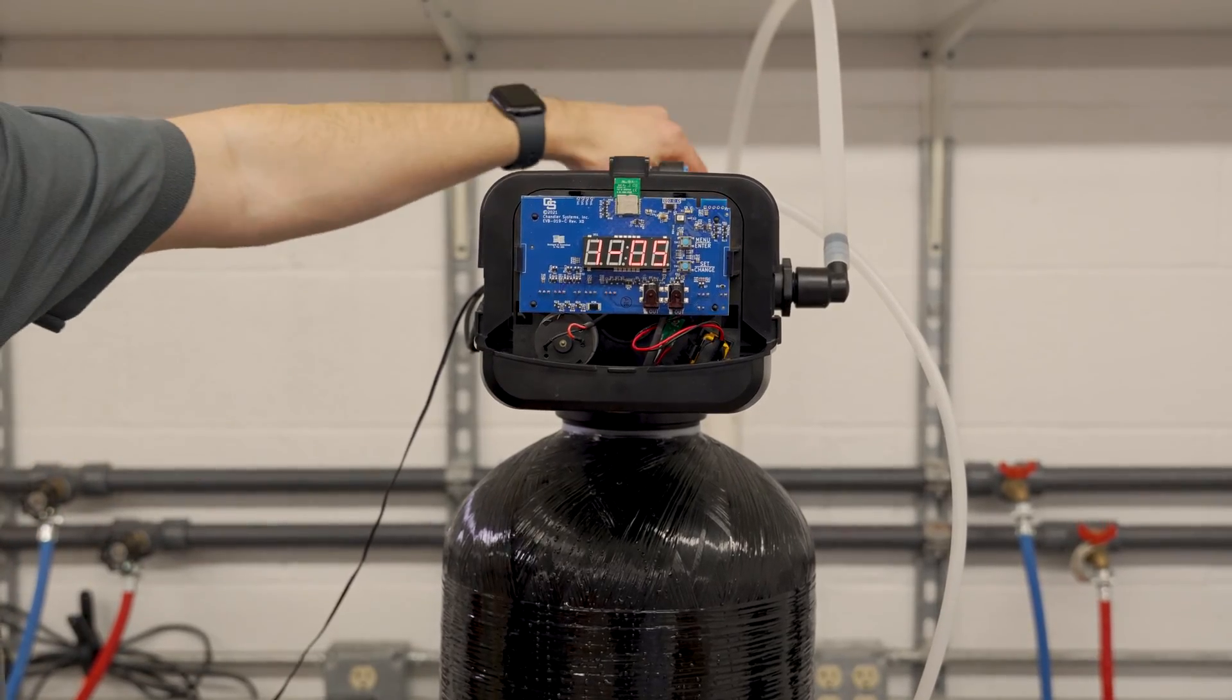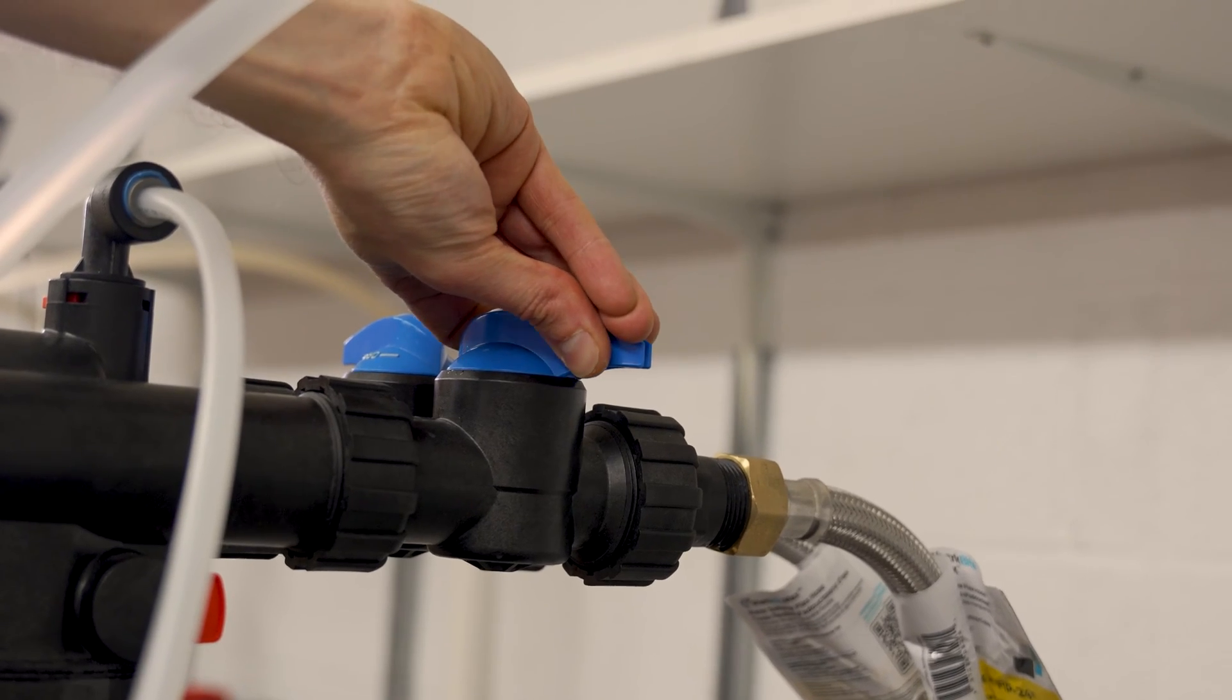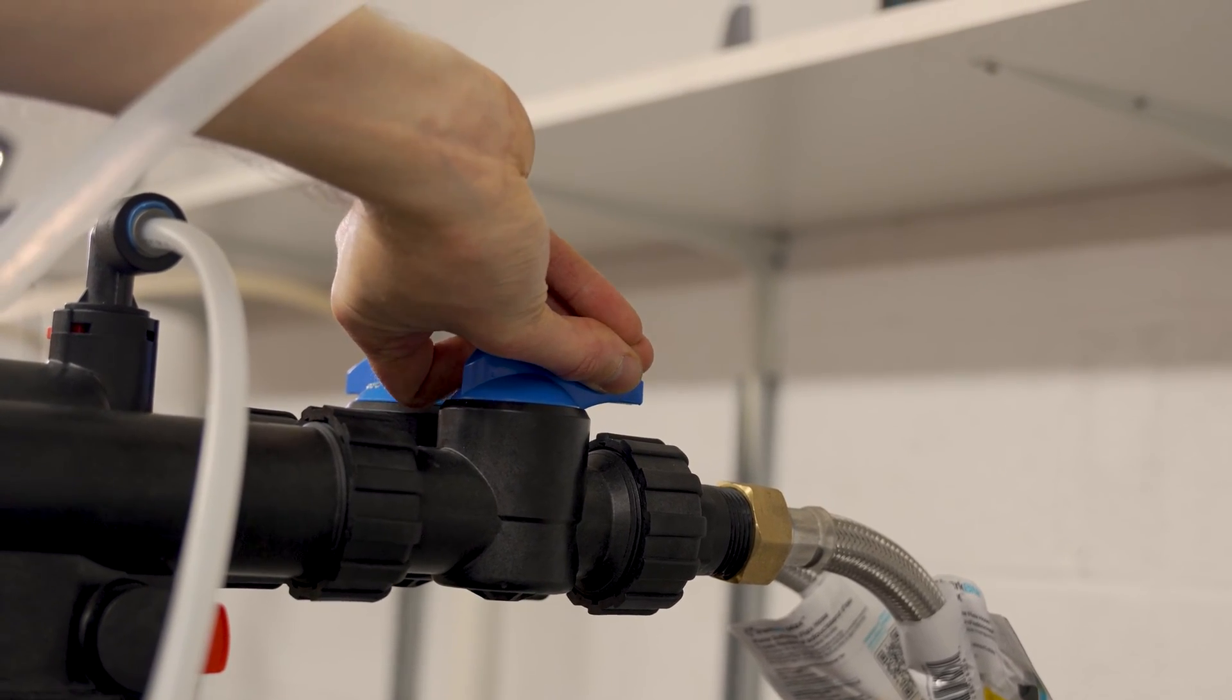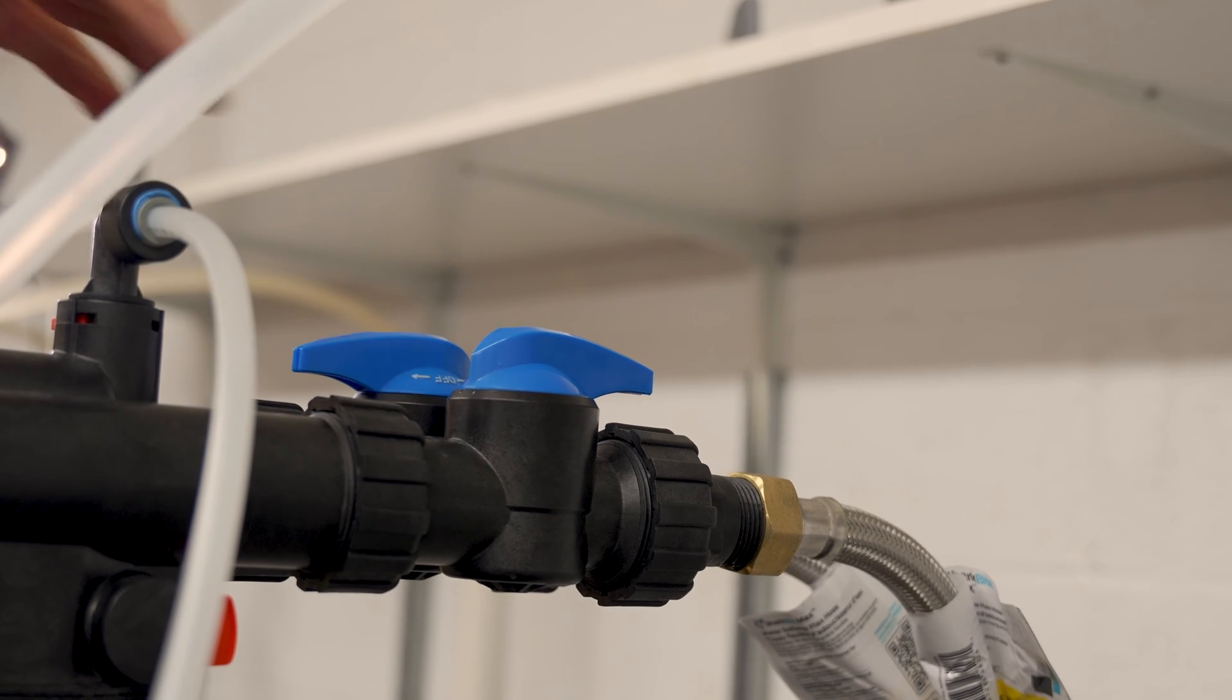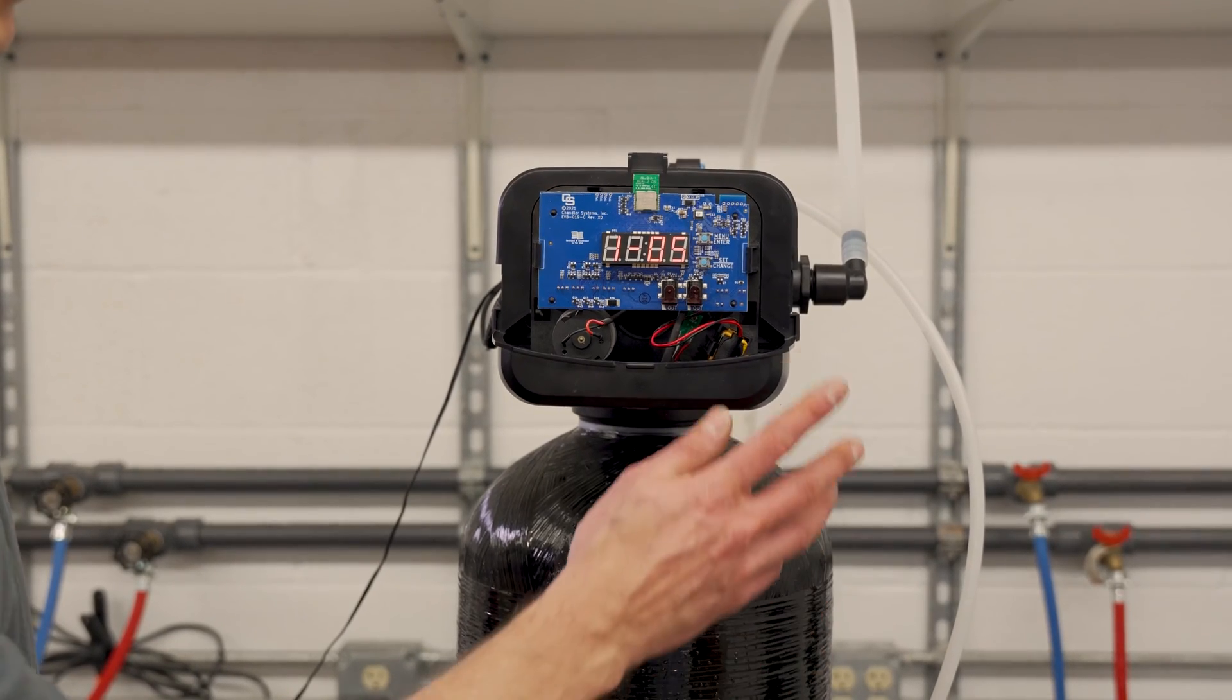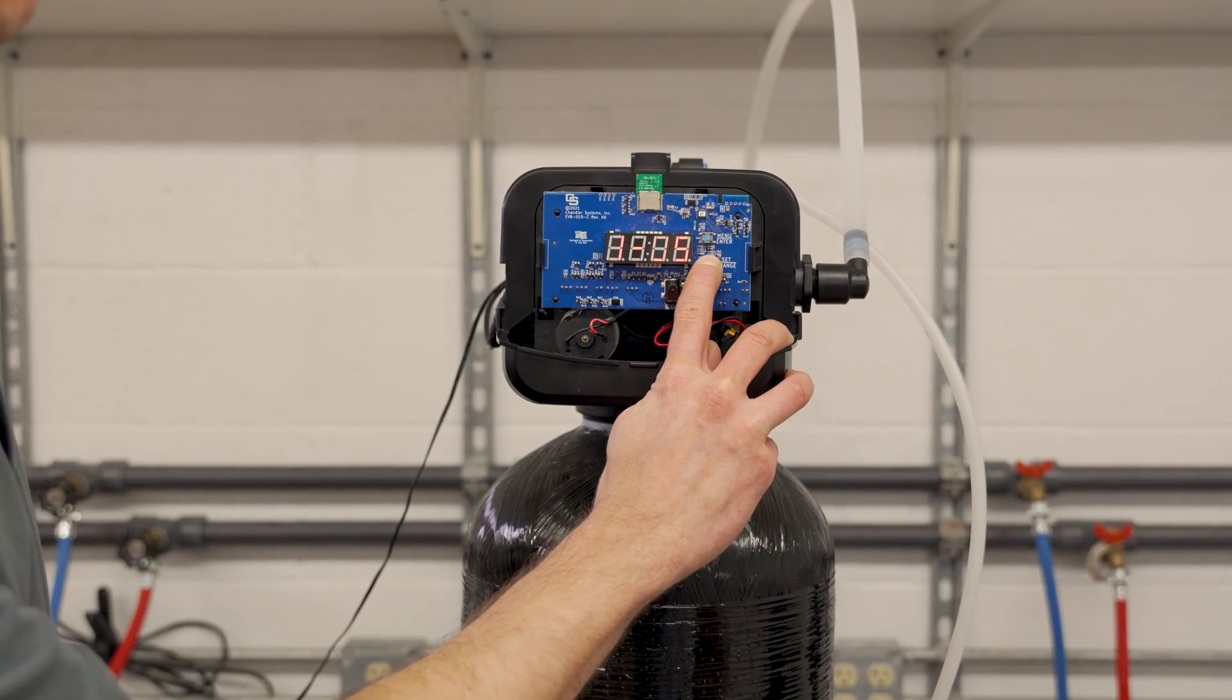We're still in the backwash position. I'm going to go ahead and slowly turn the inlet valve and then turn the outlet valve. You can let it go through cycle from here or cycle it through the steps back to home.